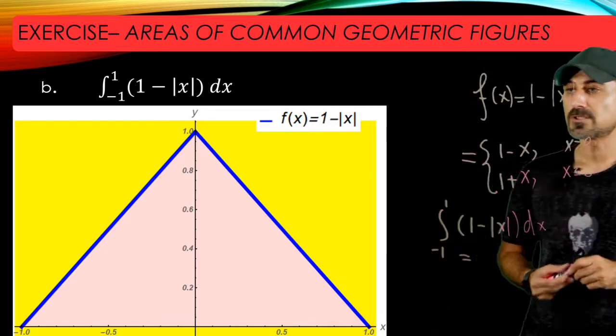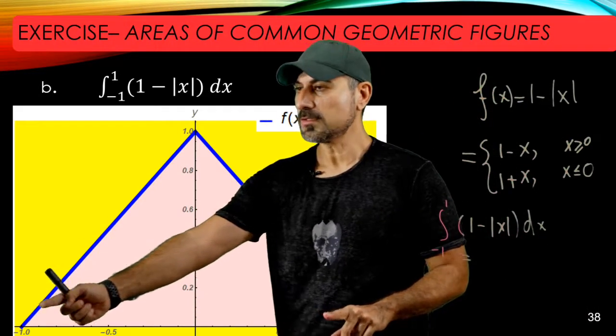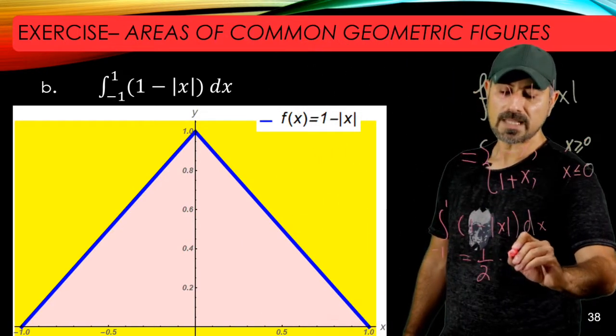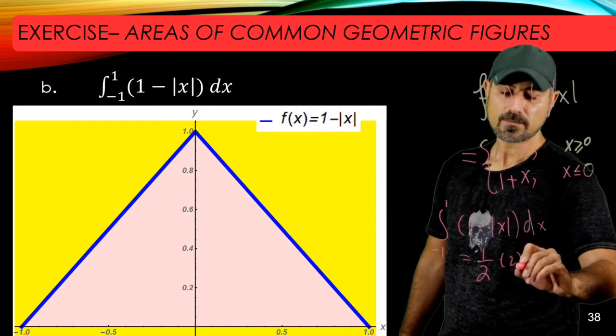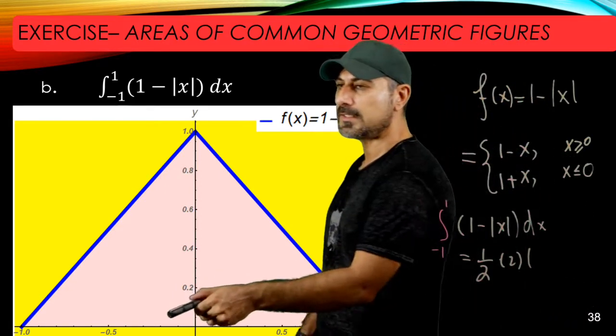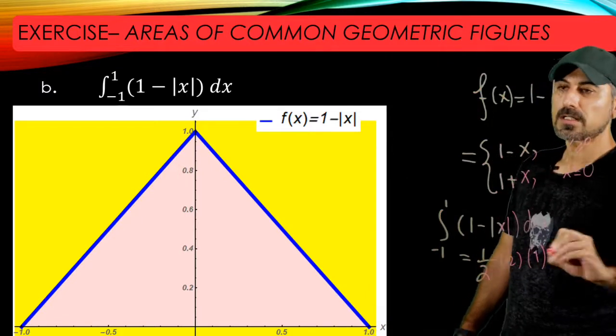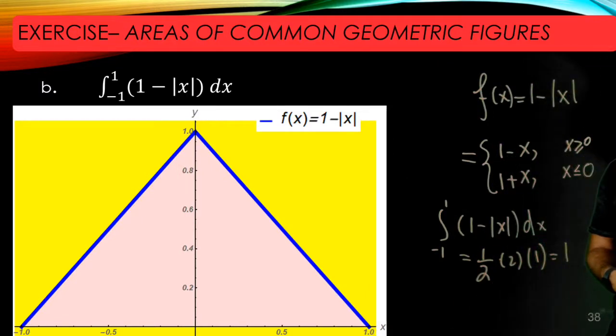So the base is from negative one to one, so it's just two units. One-half times the base times the height—and the height here is from zero to one, so it's one. So you're talking about the area of one. So you can go ahead and write just one here.